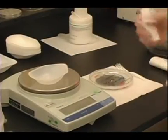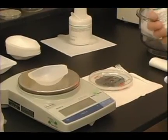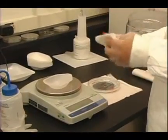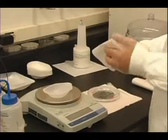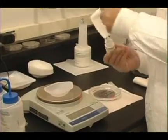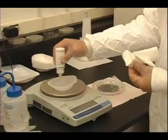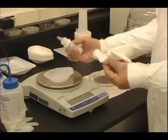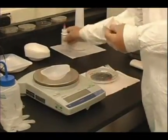Basically what you have is a master of SU8 photoresist on top of silicon. We're going to pour a two-part elastomer, PDMS, on top of that master, and that PDMS will form a mold.